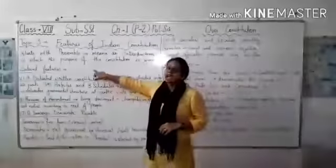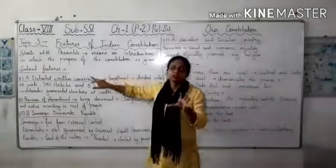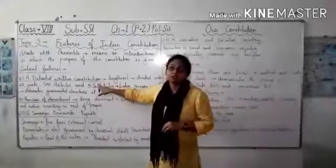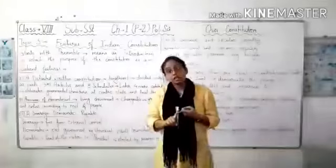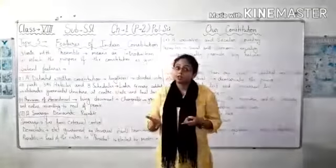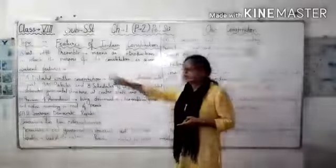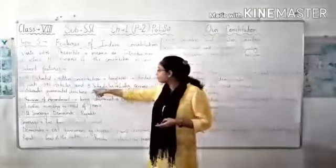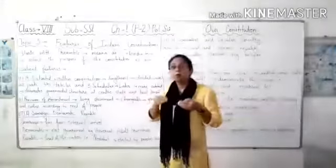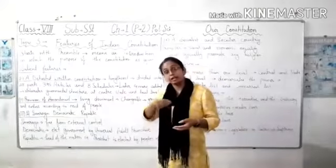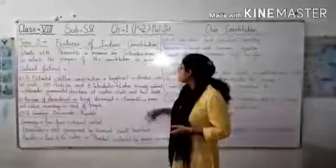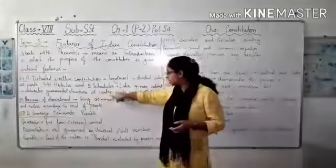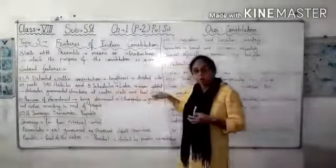Now, we will go to the salient features of our Constitution. Our Constitution is a detailed written Constitution. It is the lengthiest Constitution of the world. It is divided into 22 parts, 395 articles, 8 schedules, and 4 more schedules were added later. It elaborates the governmental structure at centre, state, and local level.